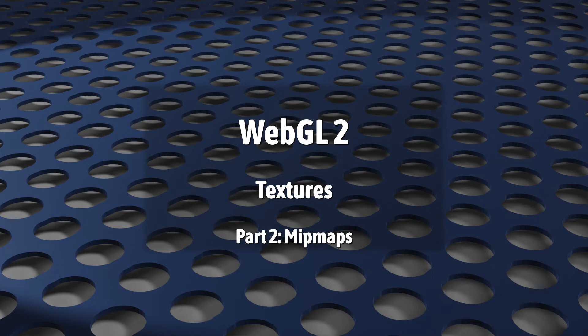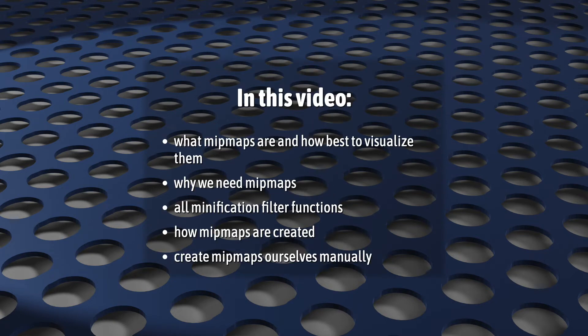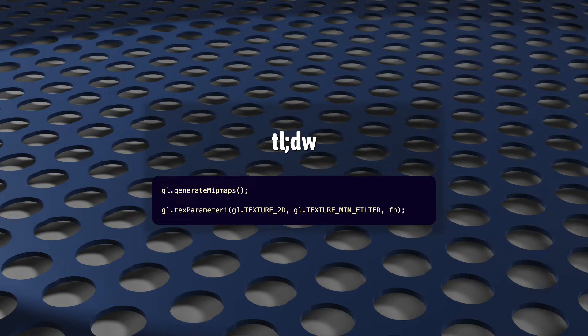This video is all about mipmaps. We'll look at what they are and how to best visualize them. We'll see why mipmaps are needed. We'll look at the full range of minification filter functions that are available to us in WebGL. We'll look at how mipmaps are created, and we'll try creating them ourselves manually. Honestly, I'm kind of not sure why I'm making such a long video on this. In most projects, mipmaps come down to a couple lines of code, but I find the whole thing kind of interesting, so for what it's worth, here it is.